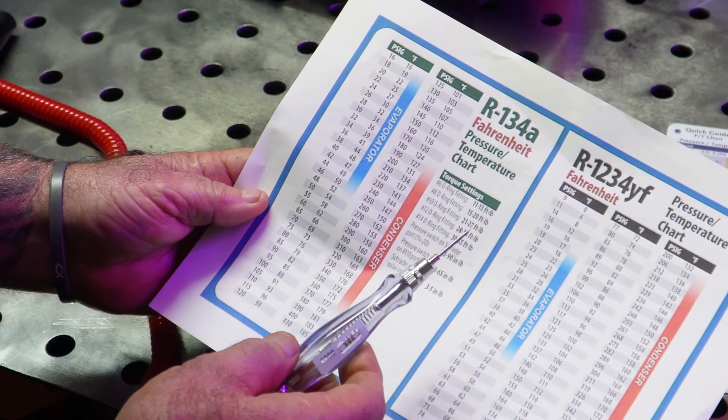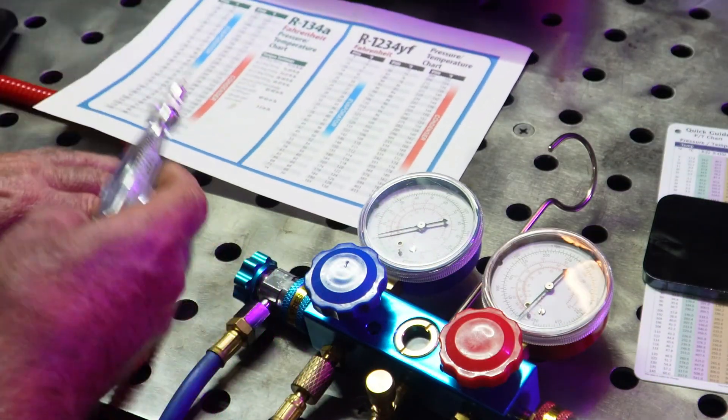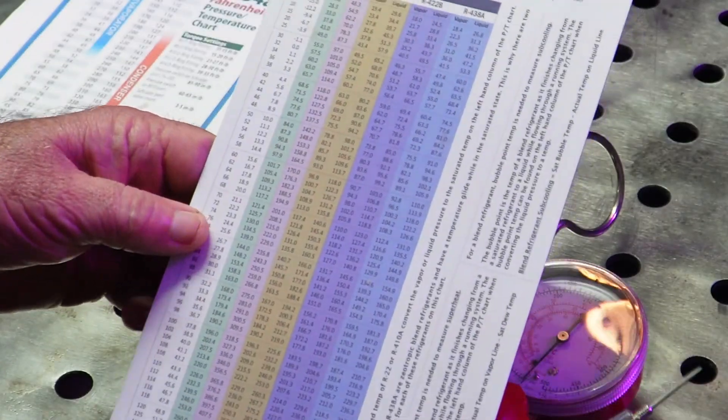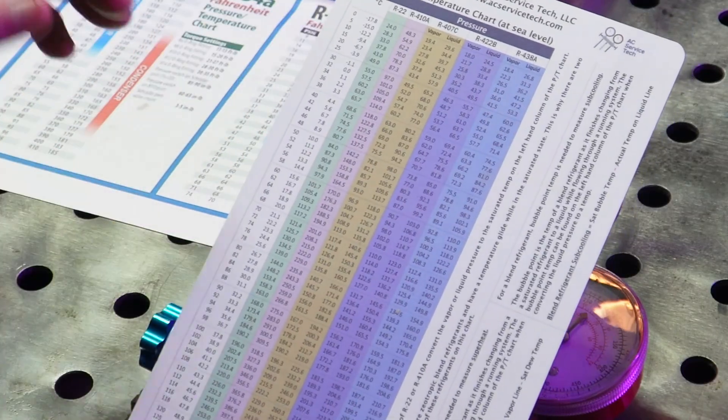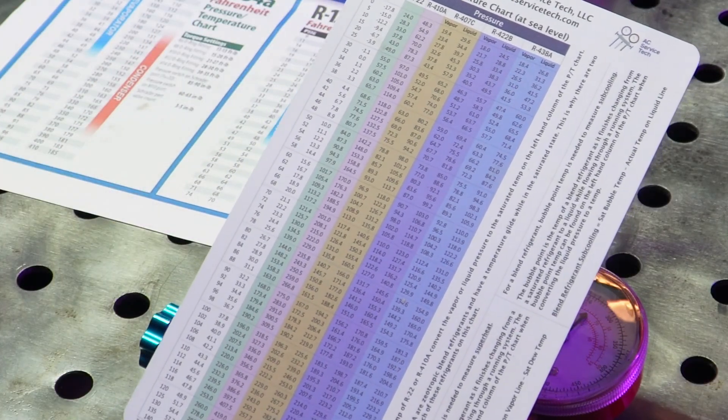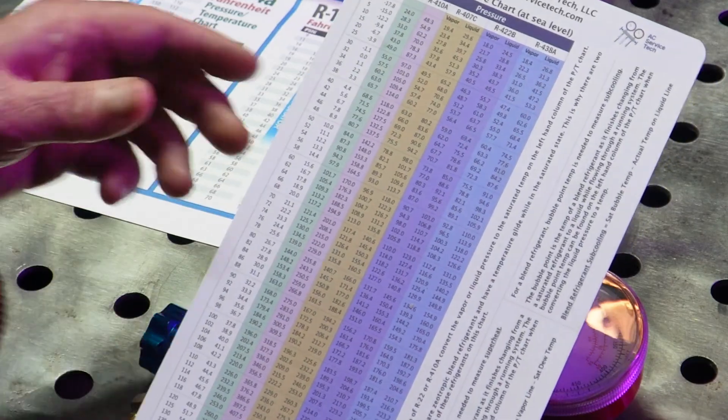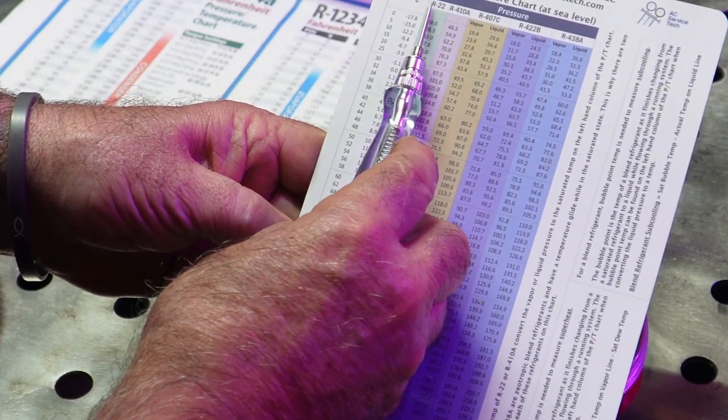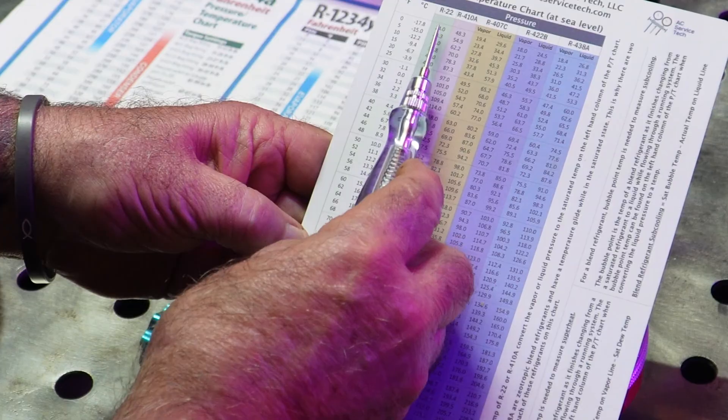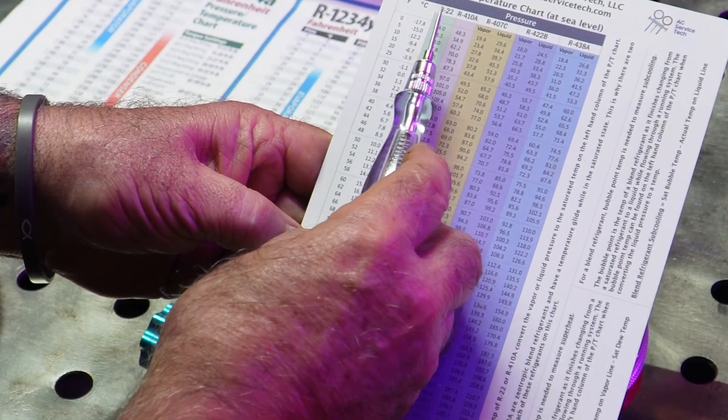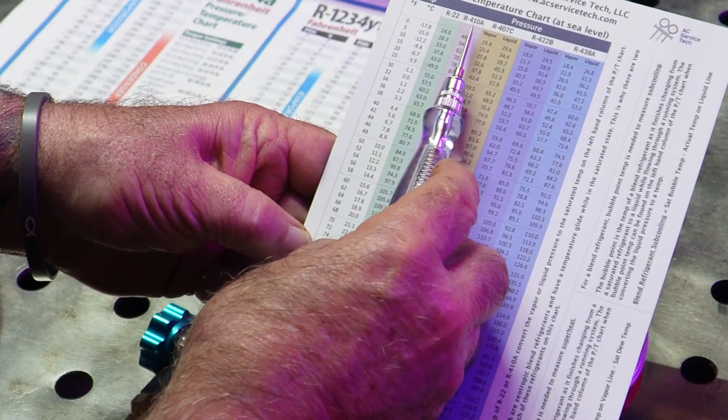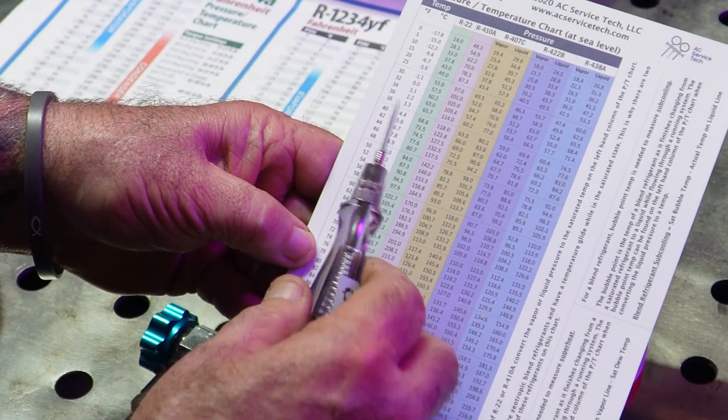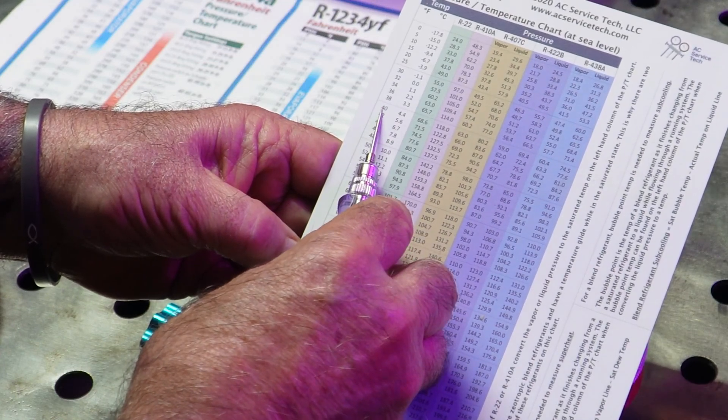What about other refrigerants? From one refrigerant to the next, there are different PT charts because they're all different at what temperature the saturation temperature is for a given pressure. Here's another good example of how much it can change. We used R22 in residential air conditioners for many years, then it went through a phase out and got replaced with R410a, which is currently going through a phase out.